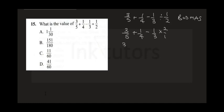1 times 2 gives us 2/3. Now we can perform the addition and subtraction. The denominators are 5, 4, and 3, so the LCM is 60. 60 divided by 5 is 12; 12 times 3 is 36. 60 into 4 is 15; 15 times 1 is 15.